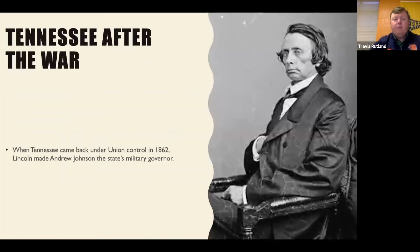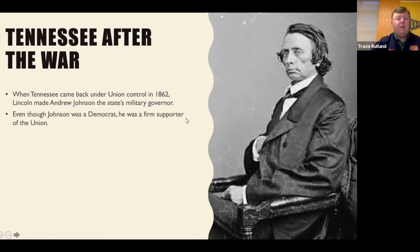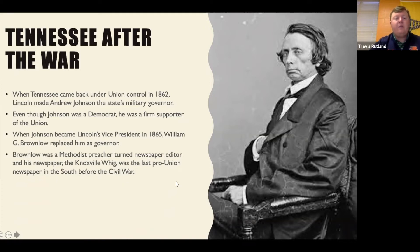Now let's look at Tennessee after the war and narrow in from the broader U.S. Reconstruction context. When Tennessee came back under Union control in 1862, Lincoln made Andrew Johnson the state's military governor. Even though Johnson was a Democrat, he was a firm supporter of the Union. When Johnson became Lincoln's vice president in 1865, William G. Brownlow replaced him as governor of Tennessee. Brownlow was a Methodist preacher who turned newspaper editor, and his newspaper, the Knoxville Whig, was the last pro-Union newspaper in the South before the Civil War.